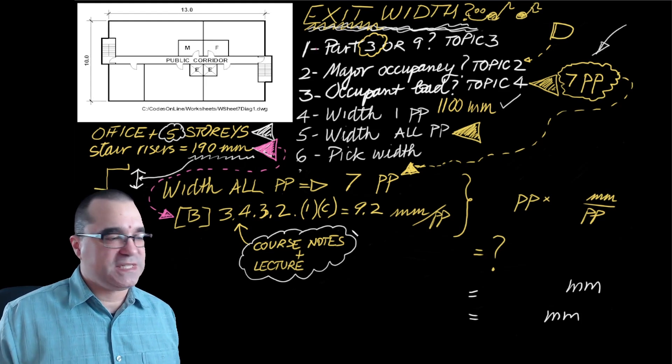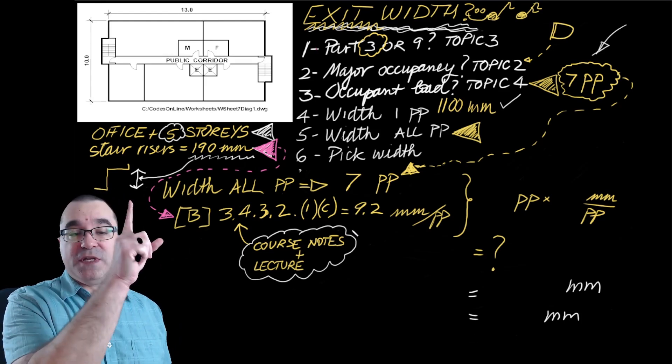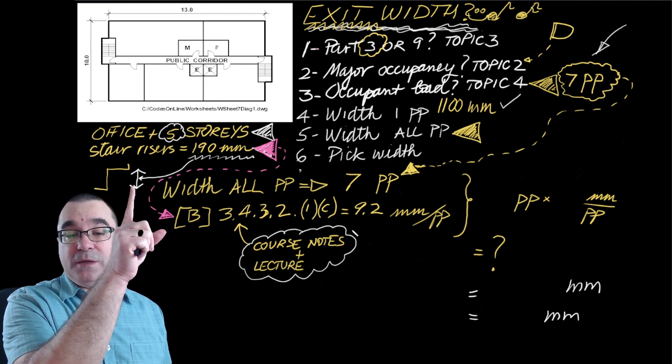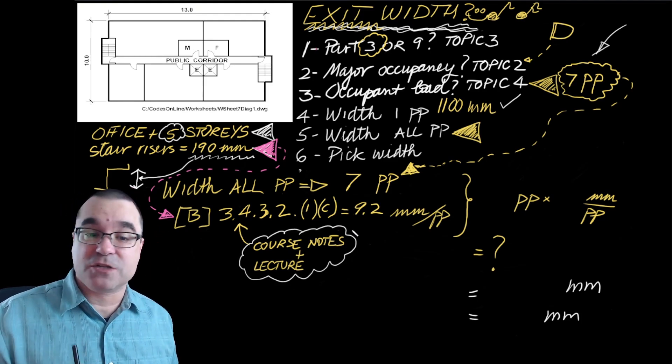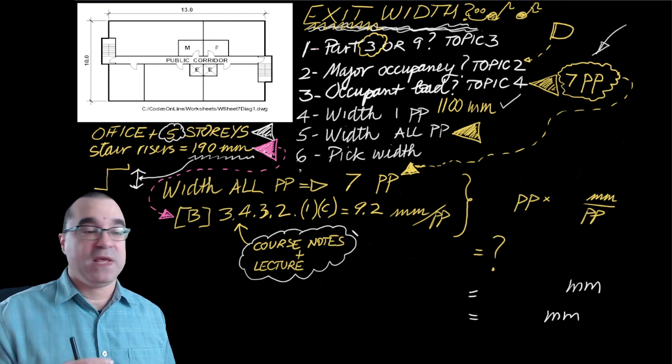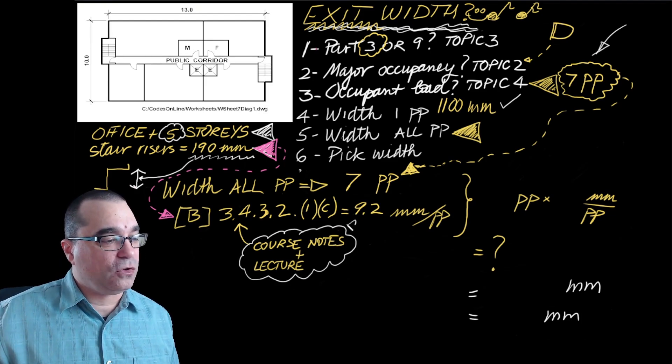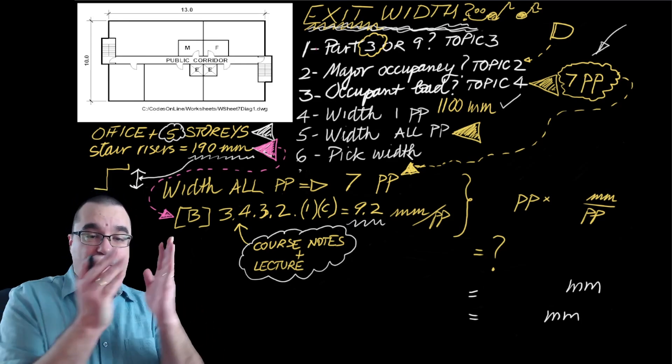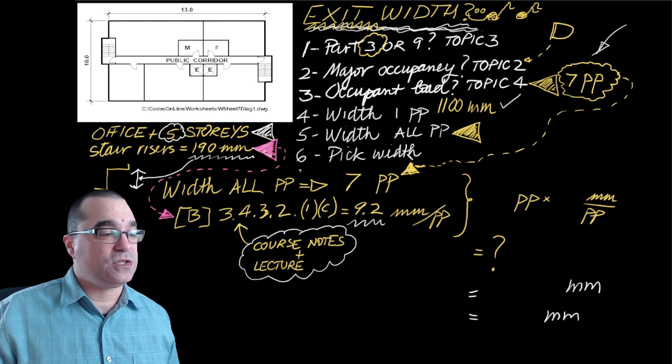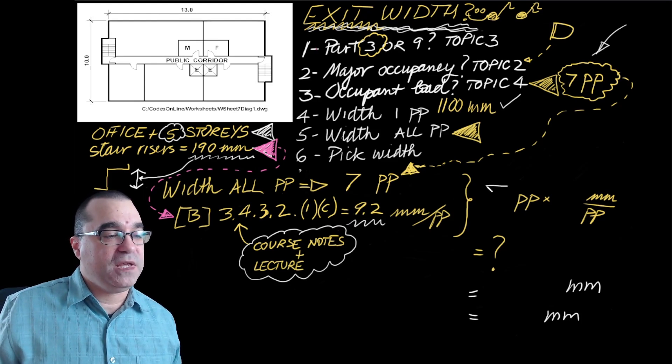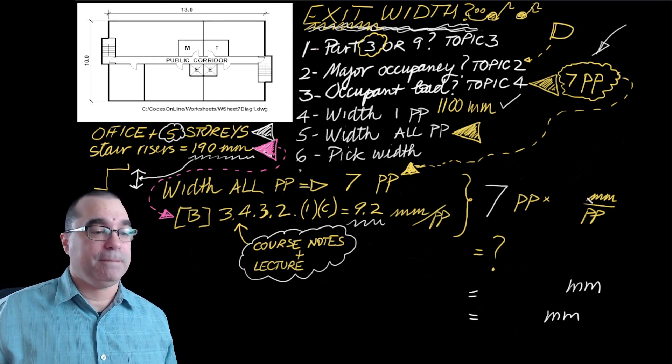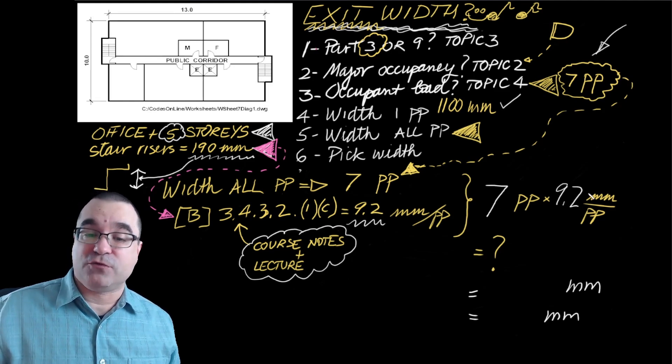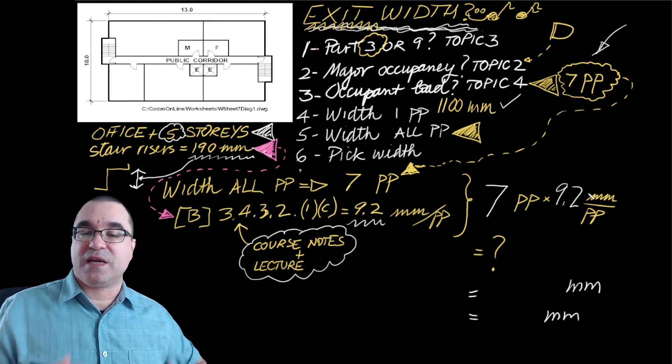And what that information says is that for stairs that have a riser of 190 millimeters, exit stairs with that dimension, you must use a factor of 9.2 millimeters per person. So to figure out the minimum width for each exit stairs, we take the number of people for each exit, multiply it by the factor for each exit for each one of those people, and then we get a number.